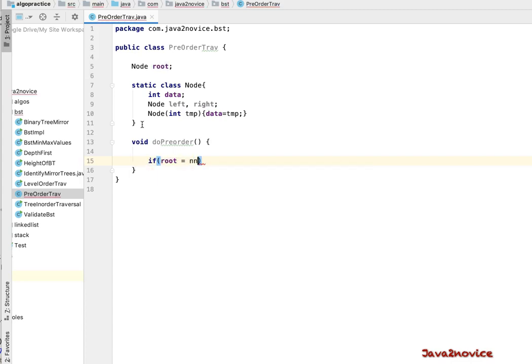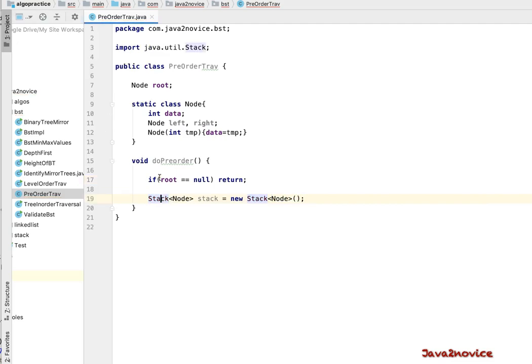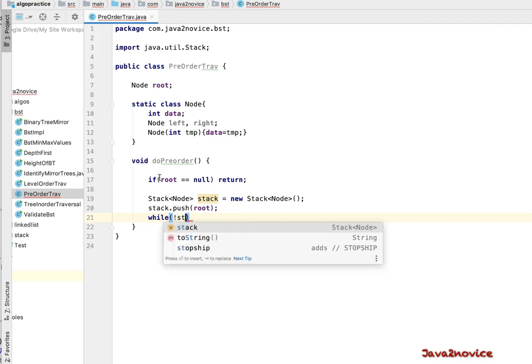First we'll check whether root is null or not. In case the root is null, we'll simply return. Now let's create a stack of type Node. Import stack. As discussed, first we will push root to stack. Root node is pushed to stack. Now we'll initiate while loop and the exit condition is as long as stack is not empty, we'll iterate through it.